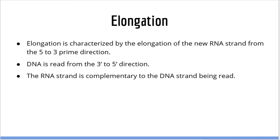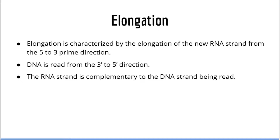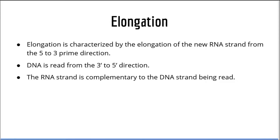Elongation is characterized by the elongation of the new RNA strand by RNA polymerase. Just like DNA replication, transcription occurs in the 5' to 3' direction. That is, RNA polymerase adds nucleotides to the 3' end of the RNA strand. As a result, the 5' end is made first. Remember, the strands in double-stranded DNA are anti-parallel, and so is the strand of RNA relative to the DNA strand being read. Therefore, DNA is read in the 3' to 5' direction and RNA is made in the 5' to 3' direction.